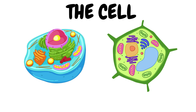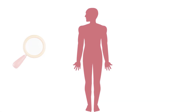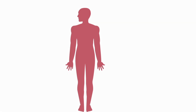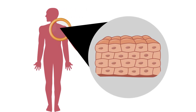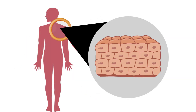A cell is the smallest structural and functional unit of life that can live on its own and makes up all living organisms. Every organism, from single-cell bacterium to human beings, is made up of cells. Some organisms consist of only one cell, while others contain trillions of cells.